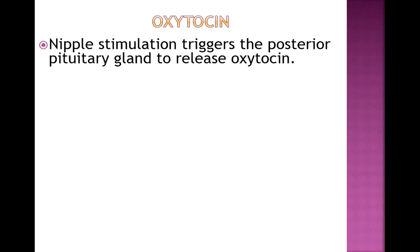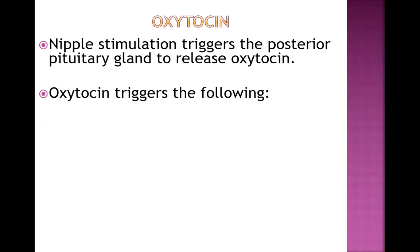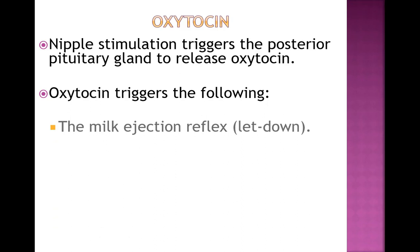Oxytocin, the other hormone responsible for lactation, is triggered by nipple stimulation. When oxytocin is released, it produces the milk ejection reflex: myoepithelial cells — the contractile unit around the alveoli — compress around the milk-making cells and push milk down the ducts, out the nipple, and into the baby. Milk ejection occurs in both breasts simultaneously, so even if the baby is breastfeeding on the right breast, there will be a letdown in both breasts and the mom may experience leaking on the opposite side.